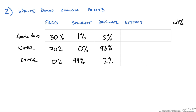To find our extract composition we need to find our mixture point for the feed and the solvent. This mixture composition will also be the mixture composition for the raffinate and extract. To do this we can either do a material balance or use the lever rule inside the phase diagram — I will quickly do both.